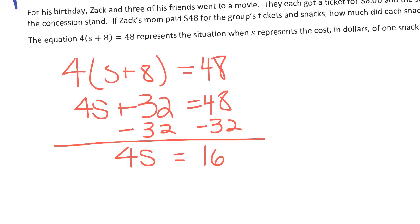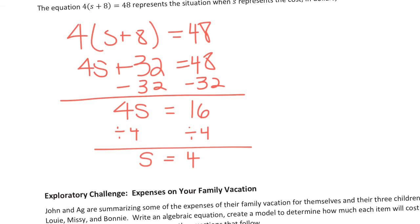Now we have a multiplication equation. The opposite of multiplication is division. And so we're going to divide both sides by 4. So you can do it this way or you can do it with the fraction bar. And so S equals 4. So each of the snacks cost $4. And then we could check our work. So we take the 4 and add it to the 8 which is what's inside the parentheses. That means it's $12 per person. There were four of them. 12 times 4 is 48.